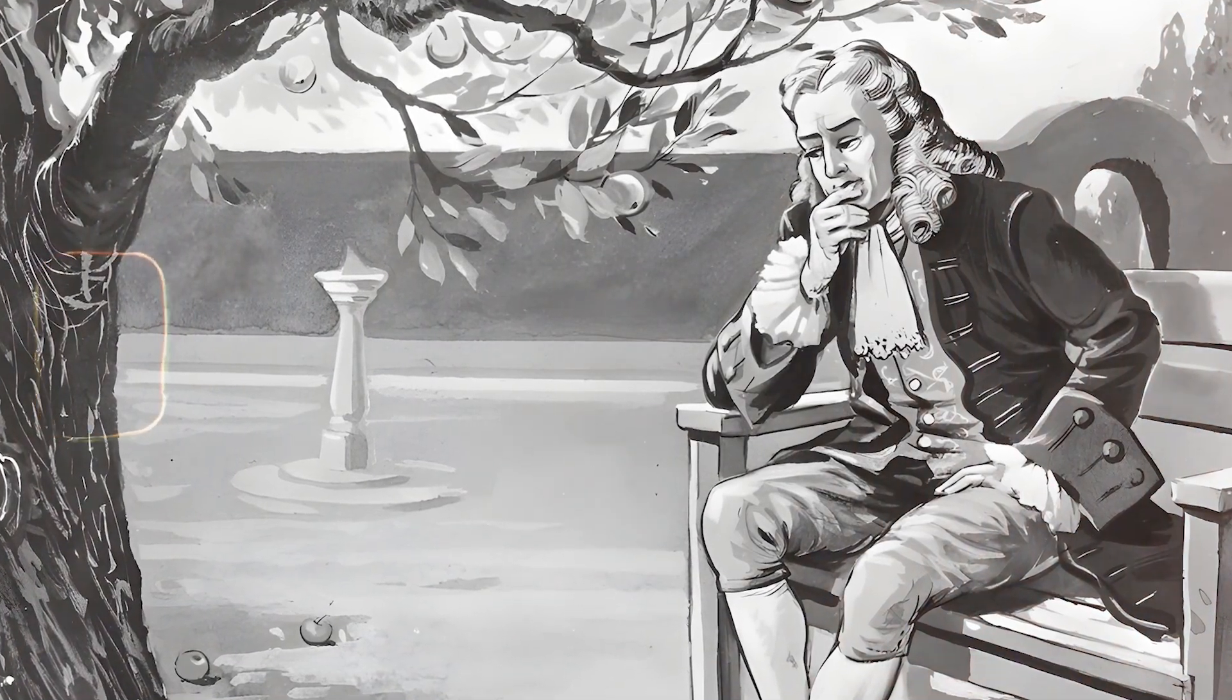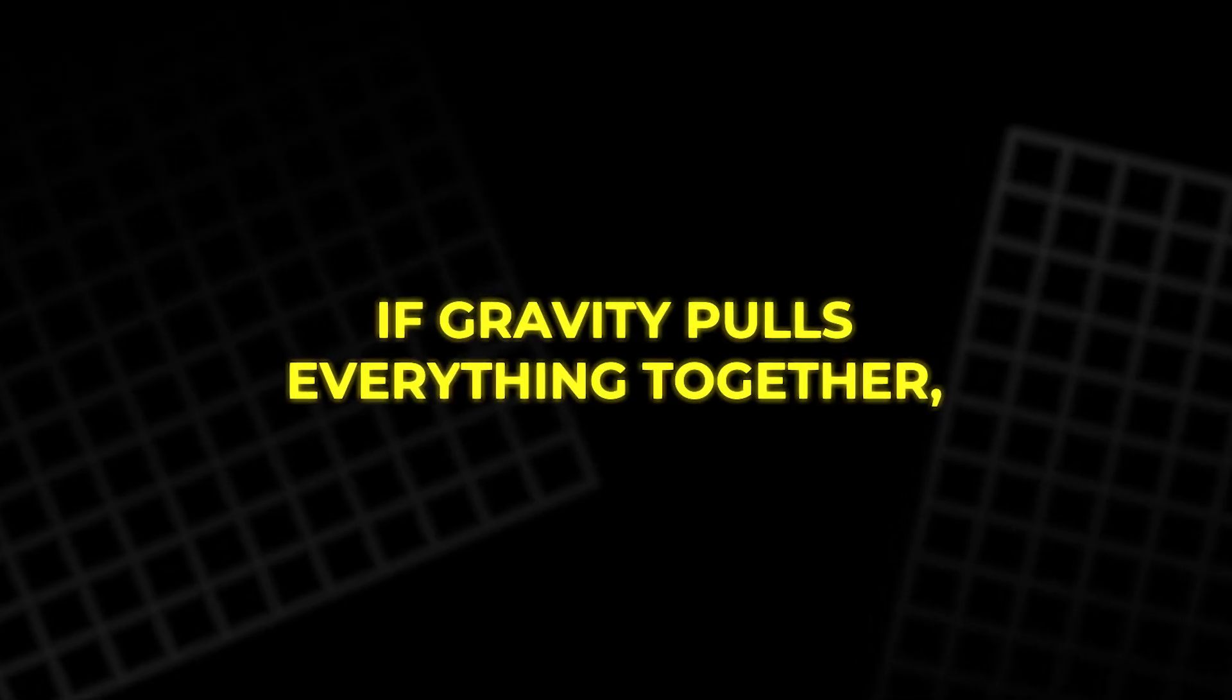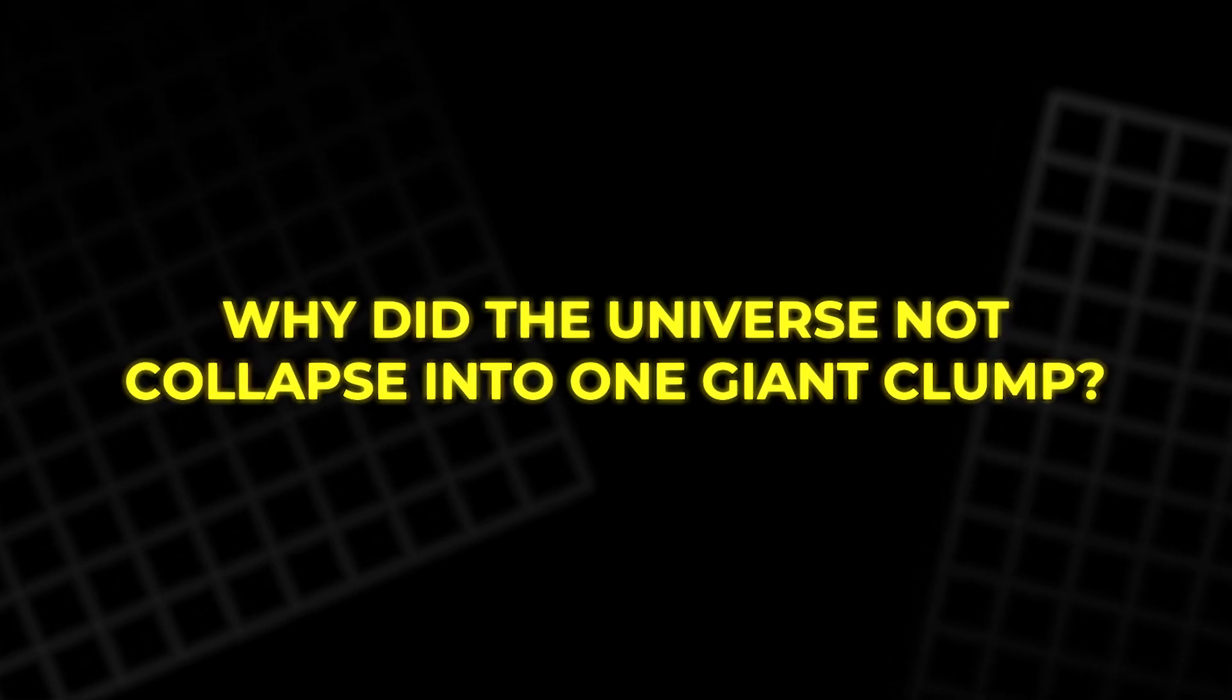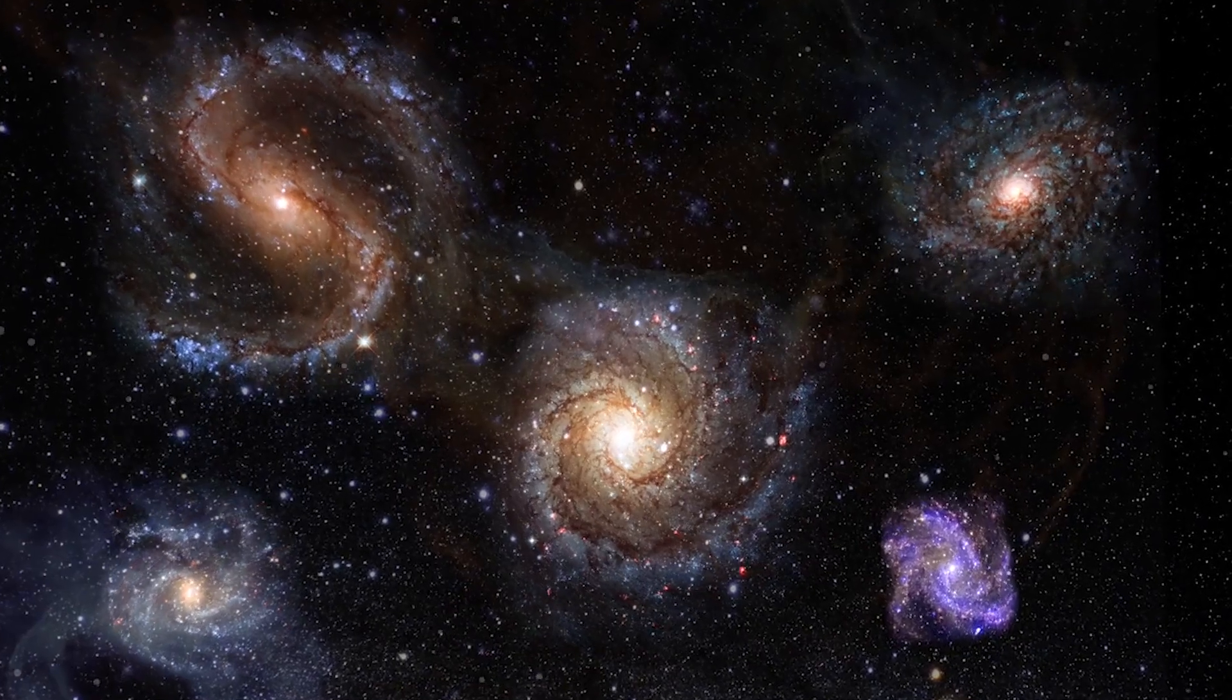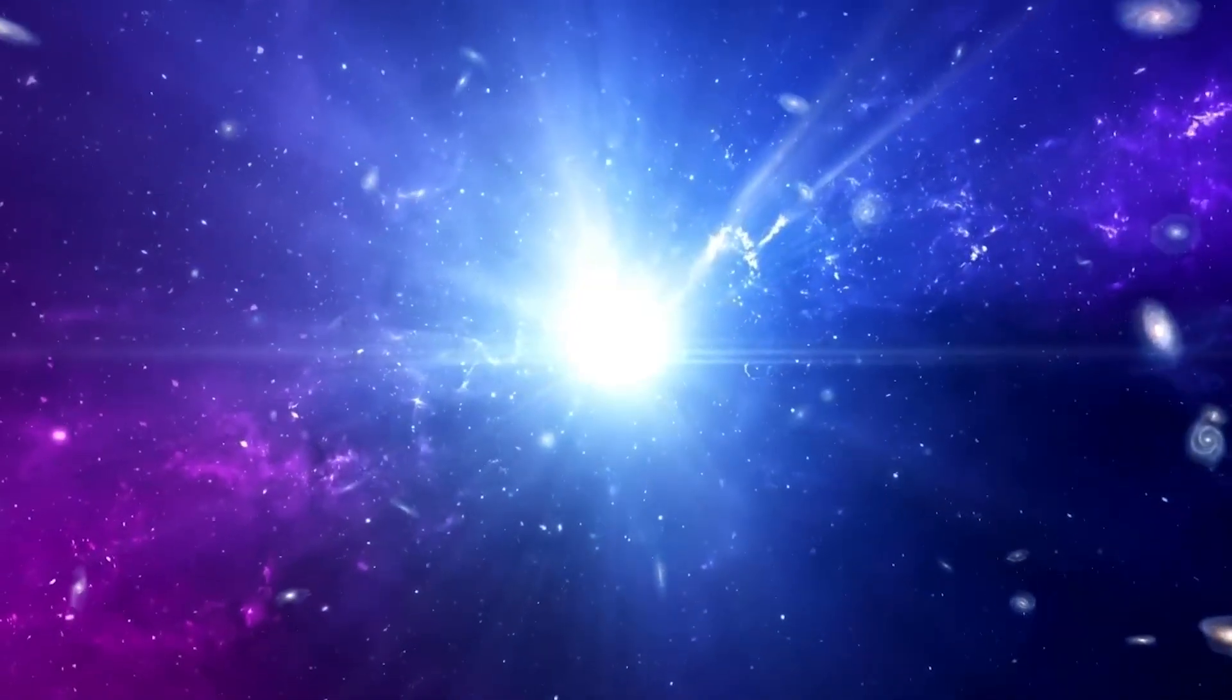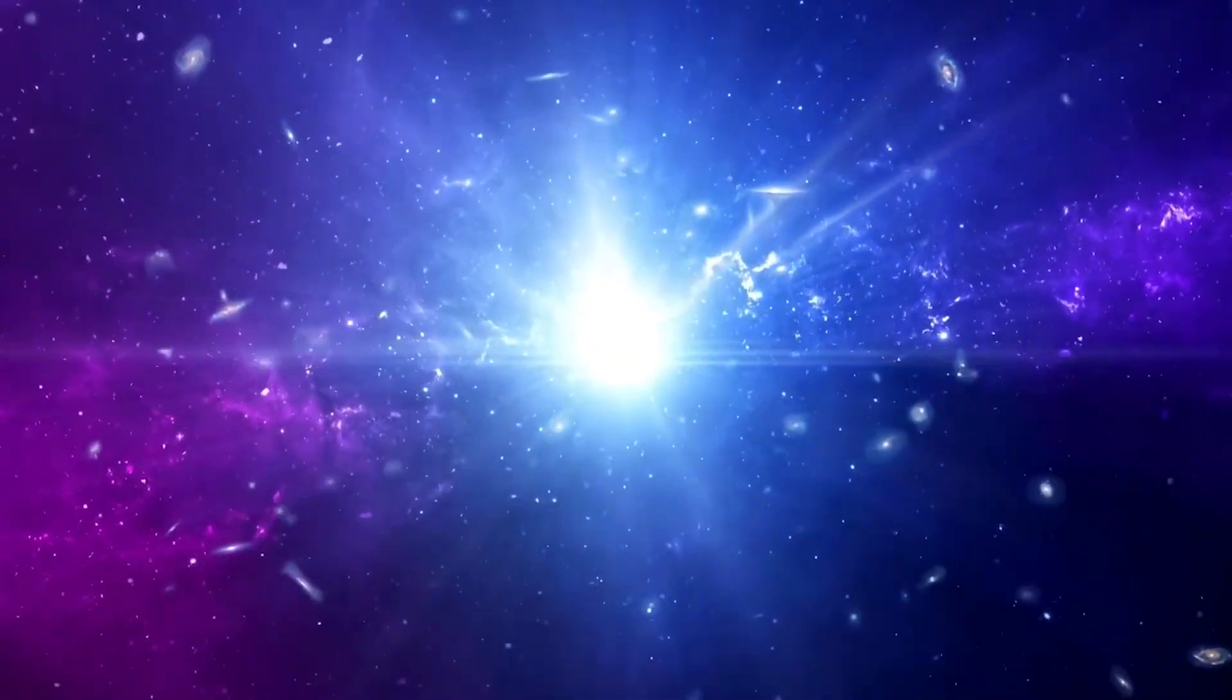But Newton had a strange problem. If gravity pulls everything together, why did the universe not collapse into one giant clump? To avoid this problem, he argued, the universe must be infinite and perfectly balanced, with no center. It became the famous static universe.